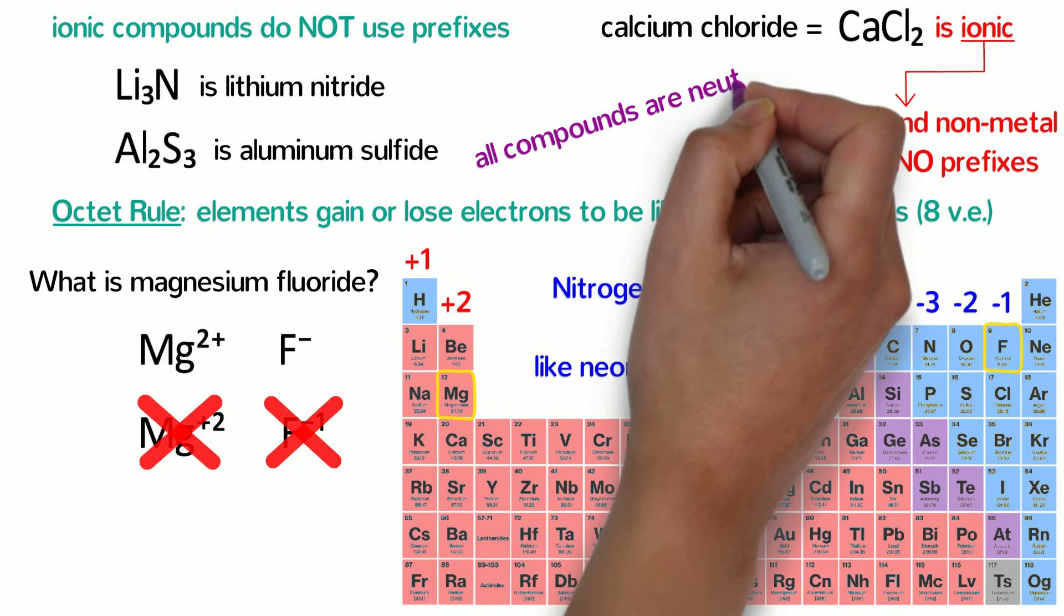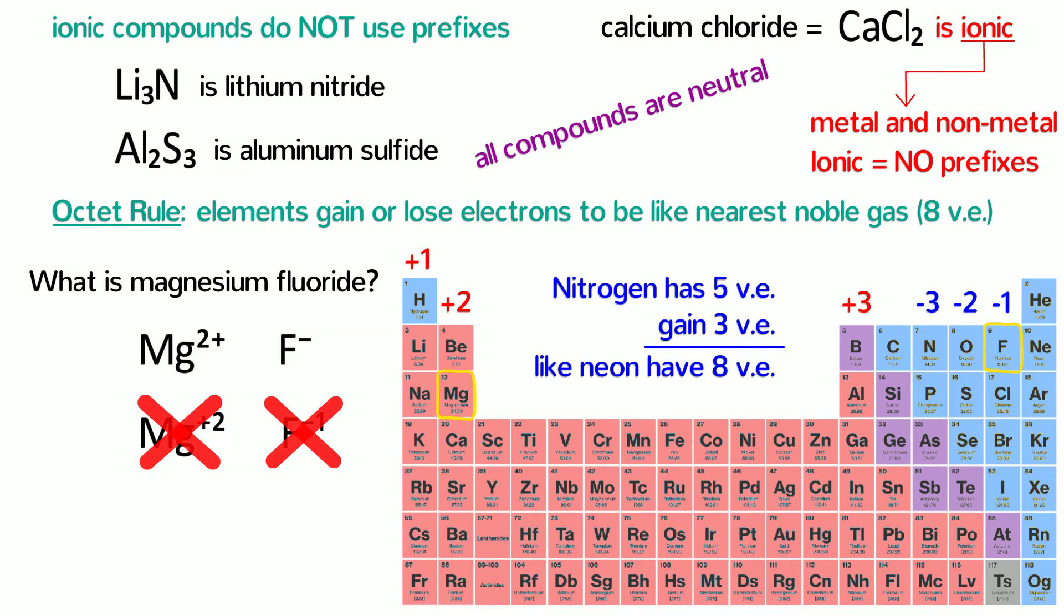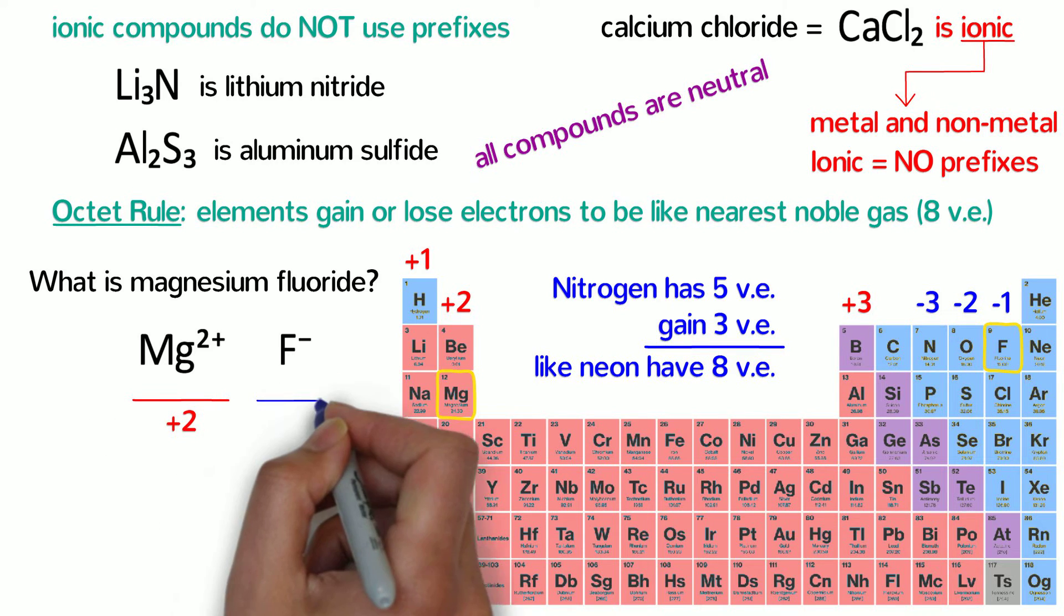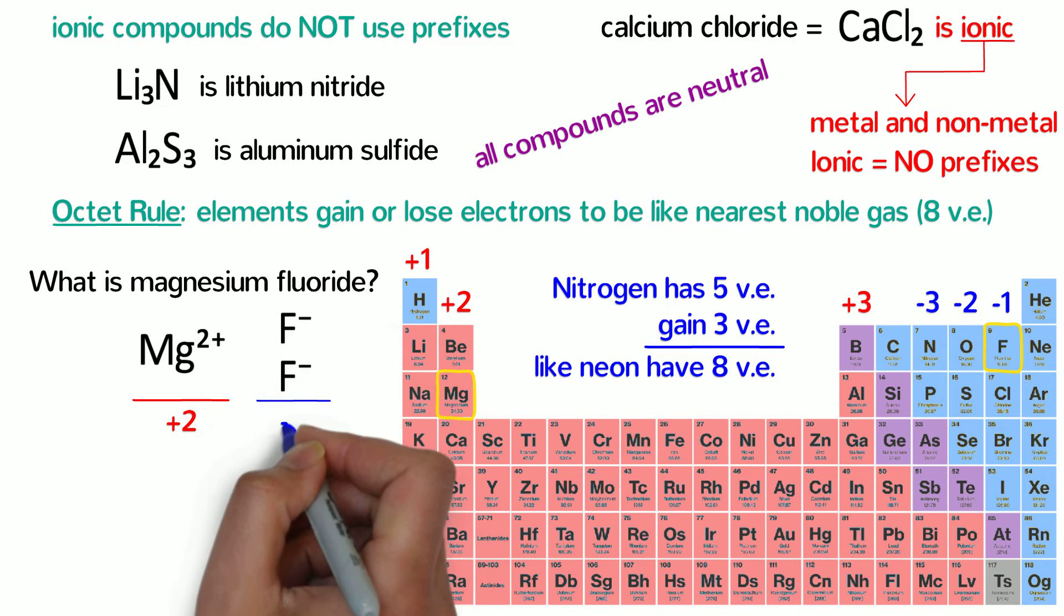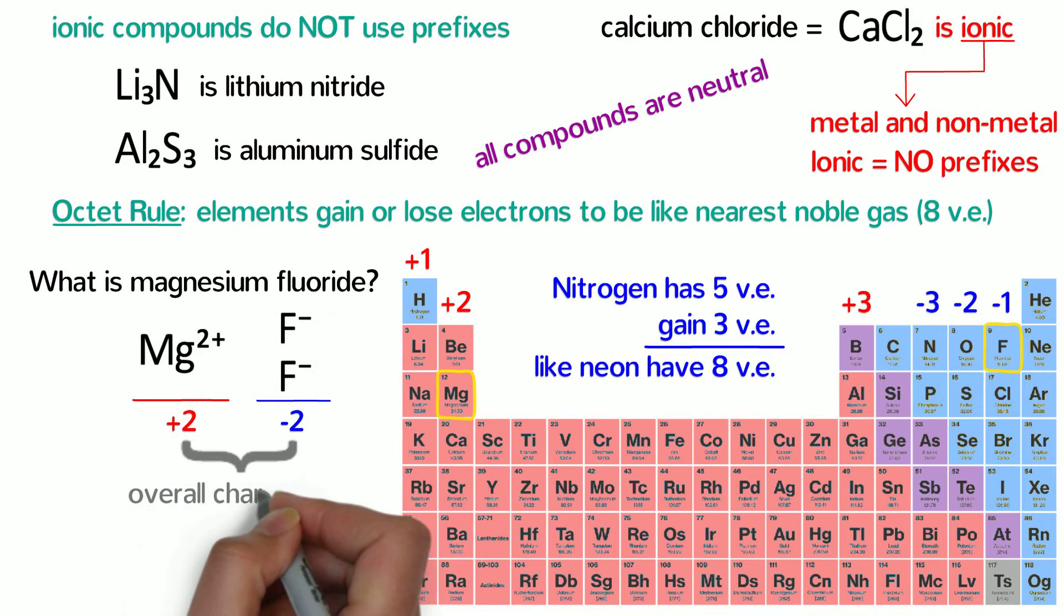Well, all compounds need to be neutral, so we need to balance the charges of the ions. In this case, magnesium has a positive 2 charge but fluoride is only negative 1, so we need 2 fluorides for every 1 magnesium to have an overall charge of 0. That means the formula of magnesium fluoride is MgF2.